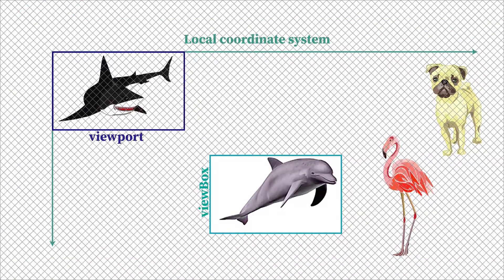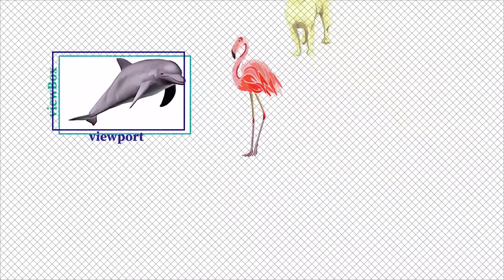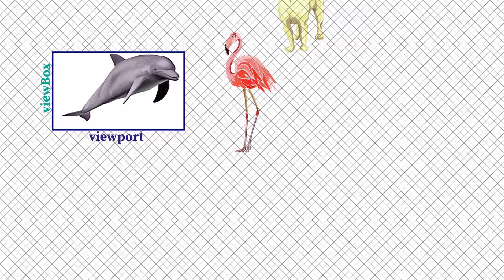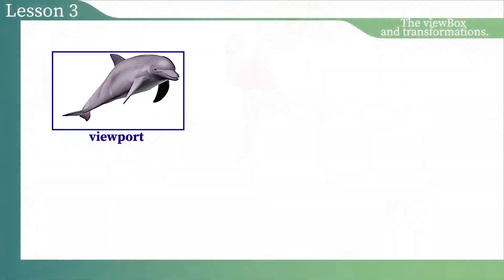The user agent binds the local coordinate system layer with the viewbox layer. If the size of the viewbox and the size of the viewport are equal, then the transform translate function will run again. The bound layers will move to the area where the viewport is. The transform translate function joins the bound layers with the viewport layer. So, we have considered the case when the size of the viewbox and the viewport are equal.